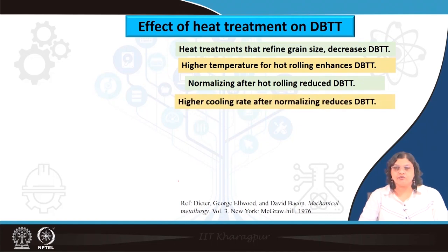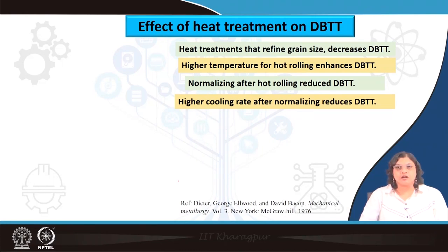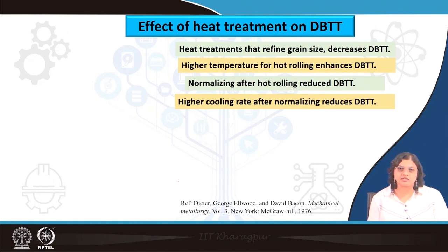While performing the normalizing treatment, we can employ a higher cooling rate. If we are cooling at a faster rate, the grain size will be finer because there is not enough time for the grains to grow. Higher cooling rate acts like a quenching and can refine the grain size, which in turn reduces the ductile to brittle transition temperature.